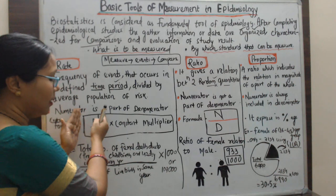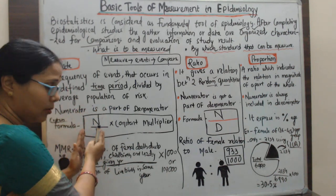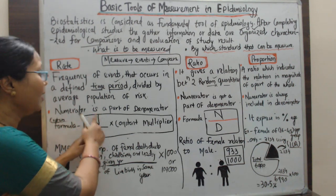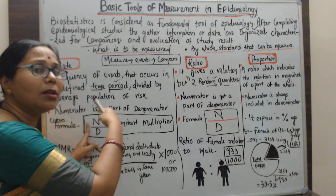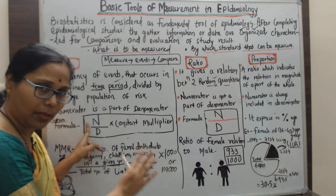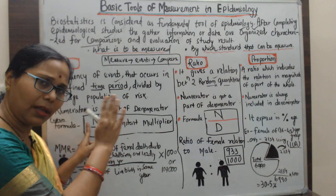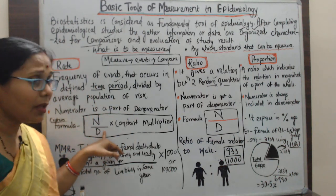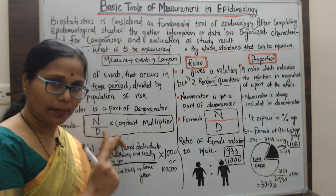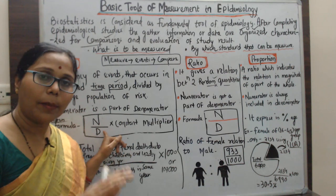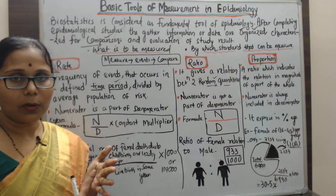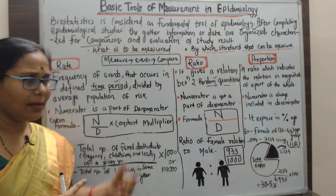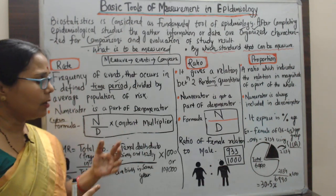The numerator is the number — the frequency of those who are in disease conditions. The denominator is the total number of population who are at risk in the same year. So the time factor is present. Another element is a constant multiplier, which may be 1,000, 10,000, or 100,000.